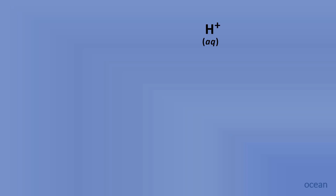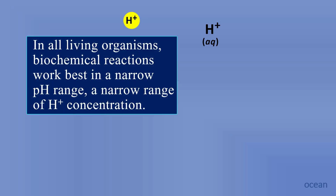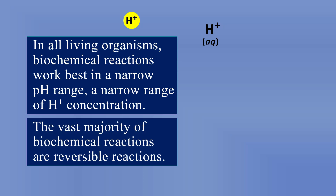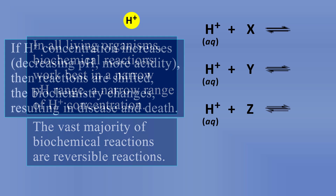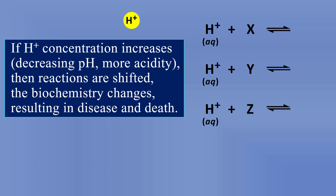What other problems does increased hydrogen ion concentration in the water create? In all living organisms, biochemical reactions work best in a narrow pH range — a narrow range of H⁺ concentration. The vast majority of biochemical reactions are reversible. So any reaction occurring in the body that involves aqueous hydrogen — if we increase aqueous hydrogen, in other words decrease the pH toward more acidity — reactions are shifted toward the right, toward the product side. That changes the biochemistry and can cause disease and death.